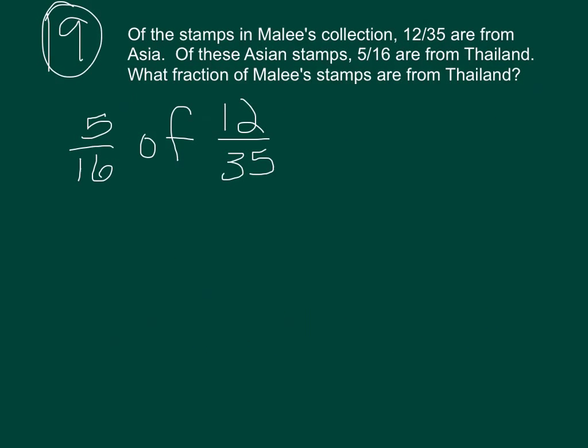Okay. Let's look at some problem solving. Of the stamps in Mali's collection, 12 out of 35 are from Asia. Of the Asian stamps, 5 sixteenths are from Thailand. So 5 sixteenths of the Asian stamps, and those are 12 out of 35. What fraction of Mali's stamps are from Thailand? So we need to find 5 sixteenths of 12 over 35.